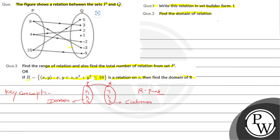Now solving question number one — what is the relation in set builder form? To define the relation in set builder form: in tabular form, the element 9 relates to 3 and 9 relates to minus 3. Then 4 relates to 2 and 4 relates to minus 2. And 25 relates to 5 and 25 relates to minus 5.